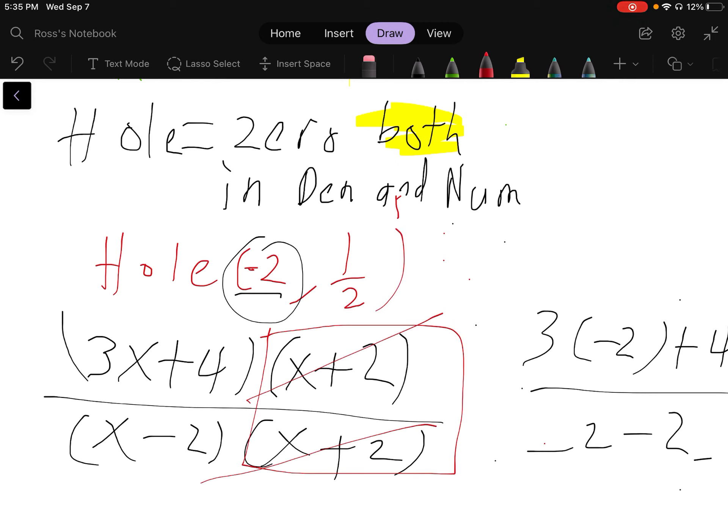So our hole's at negative 2 comma one half. I want you to practice this, identifying the hole and the vertical asymptote. Do that now. Thank you.